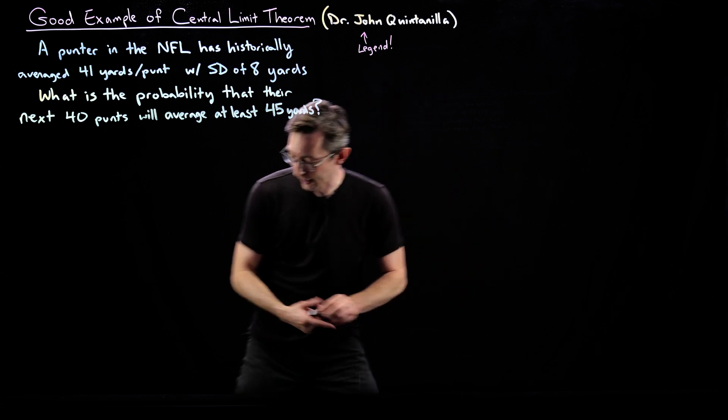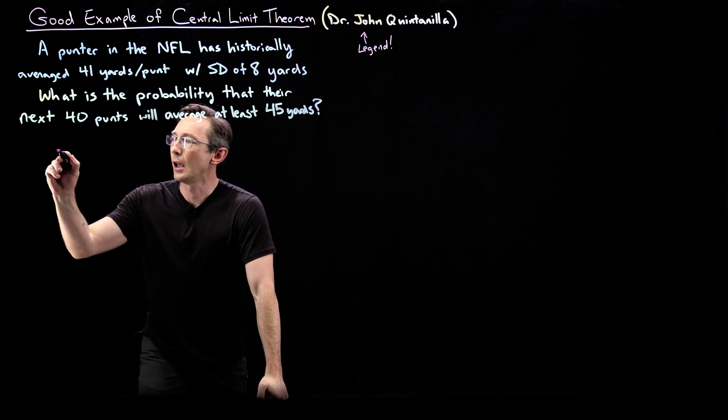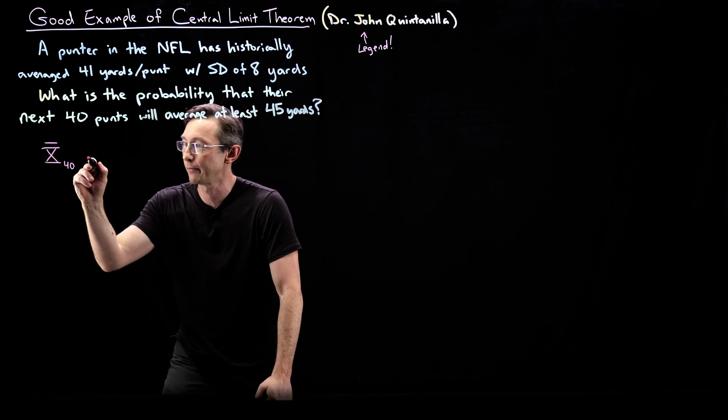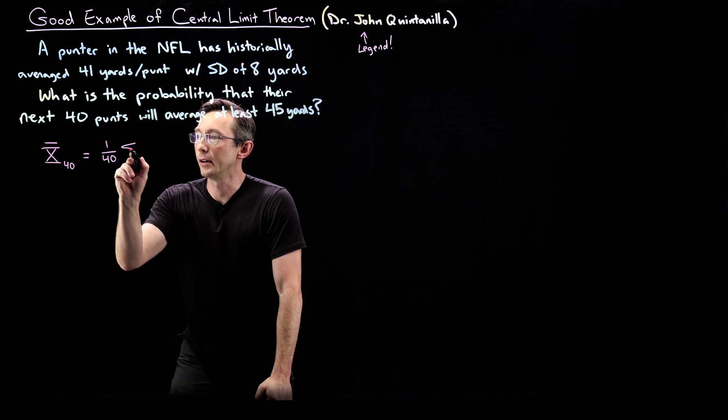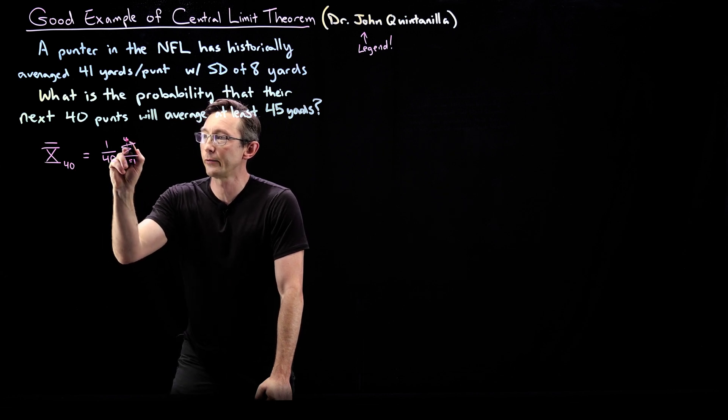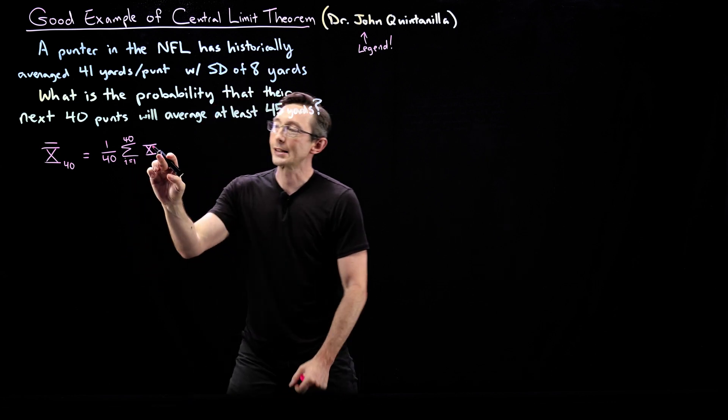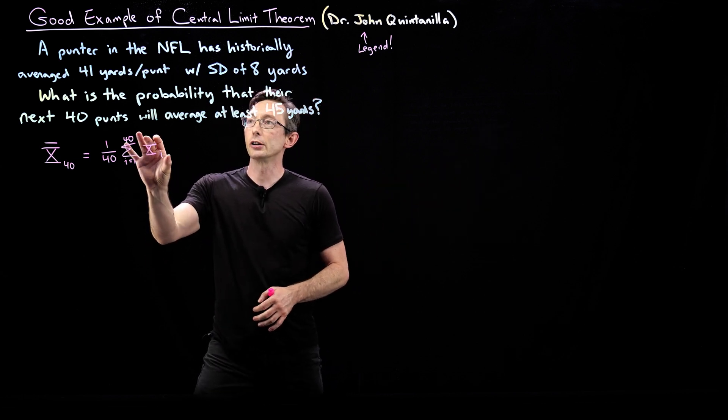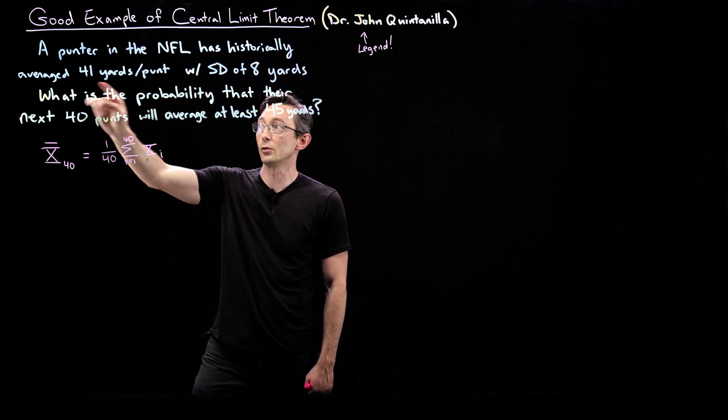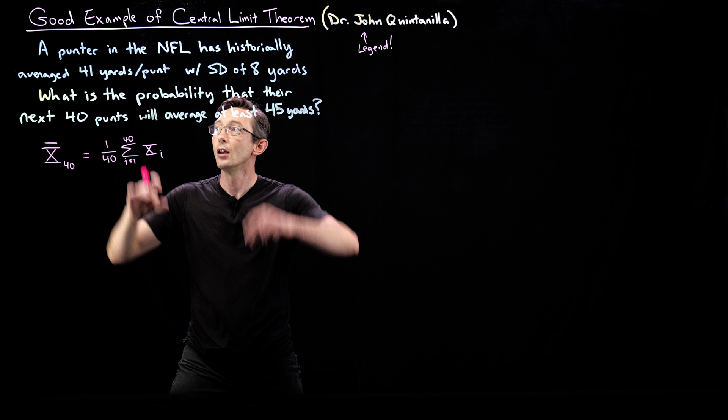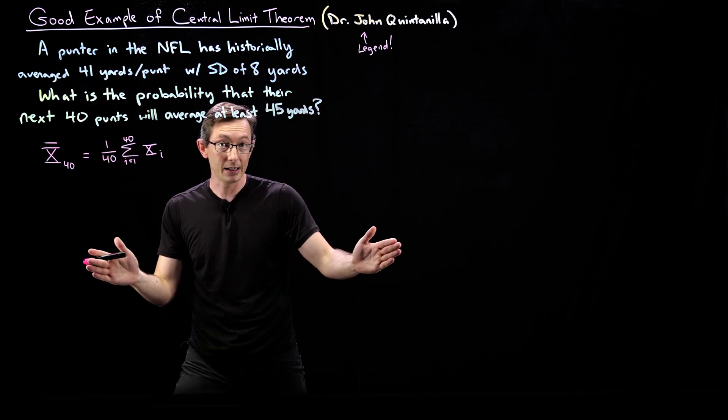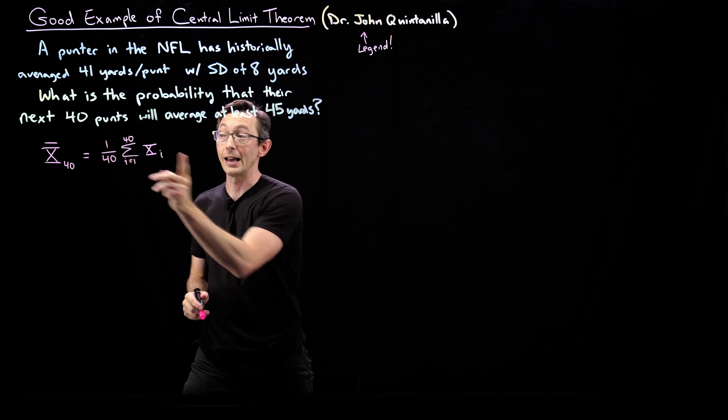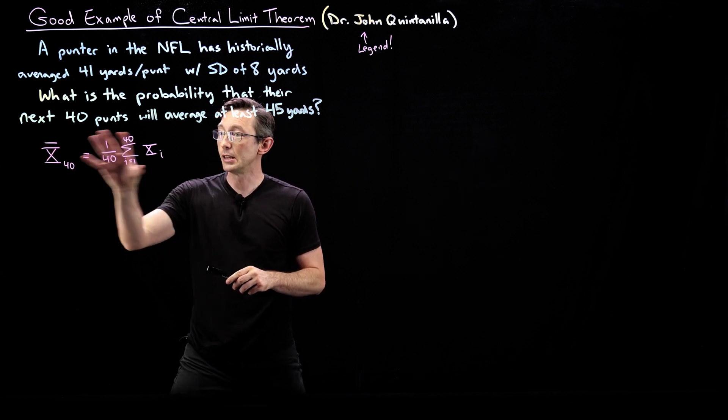So the basic idea is that we're going to introduce this random variable, our mean, we're going to call this x40 bar. This is the sample mean of these next 40 kicks. This is 1 over 40 times the sum from i equals 1 to 40 of the random variable xi, where xi is the distance of each ith next kick or next punt. So xi we're assuming is distributed according to this distribution with an average of 41 and a standard deviation of 8. We don't know what the distribution of the punter's kick length is. It might be Gaussian, it might be Poisson, we don't know, but we do know its mean and its standard deviation. And that's all we need to compute this probability with the central limit theorem. So this is our random variable.